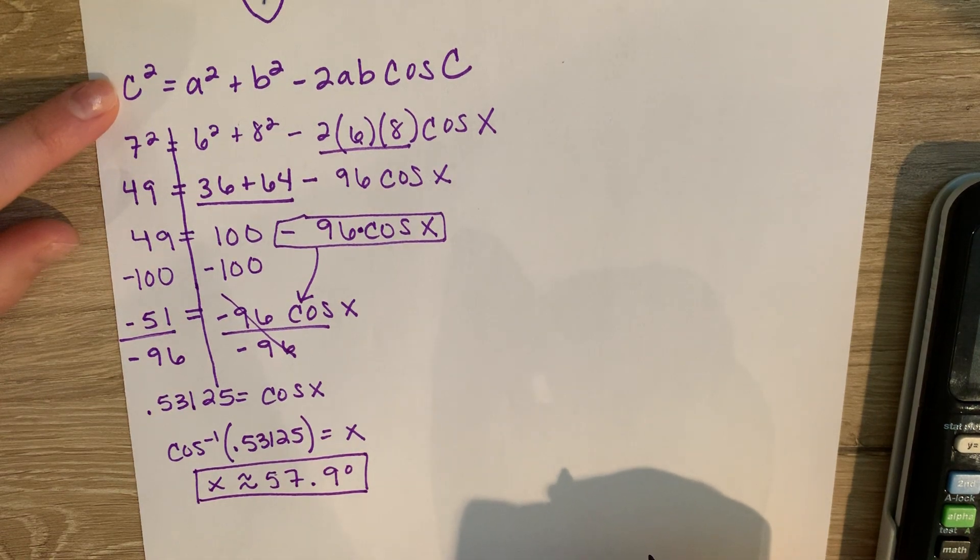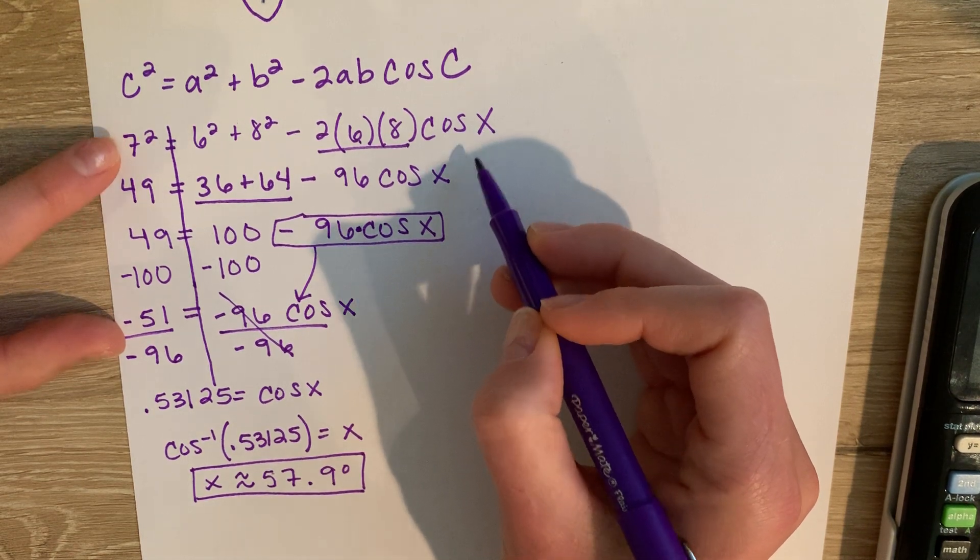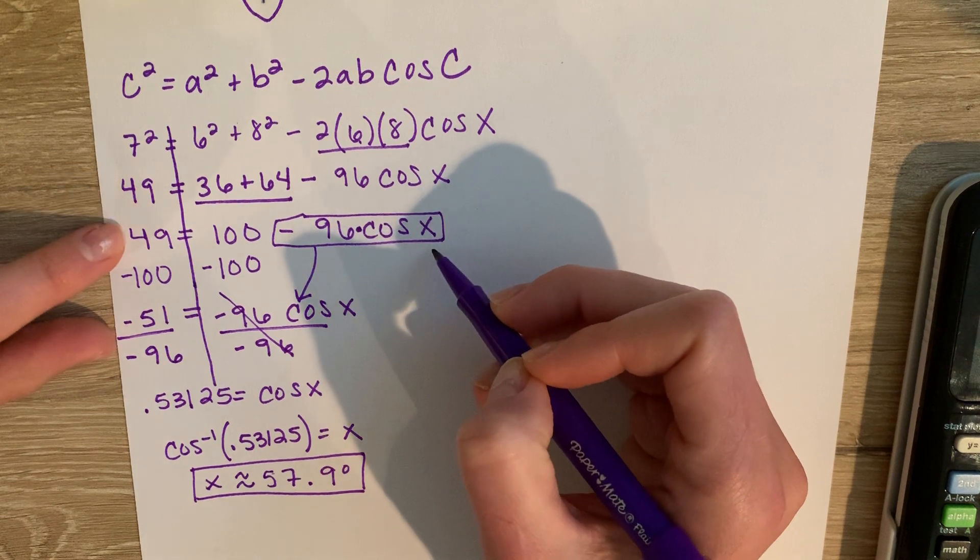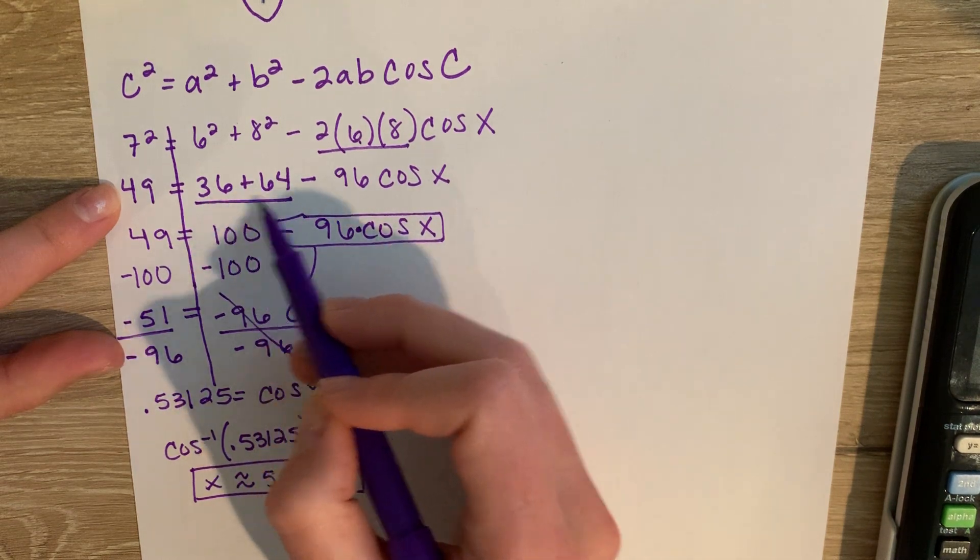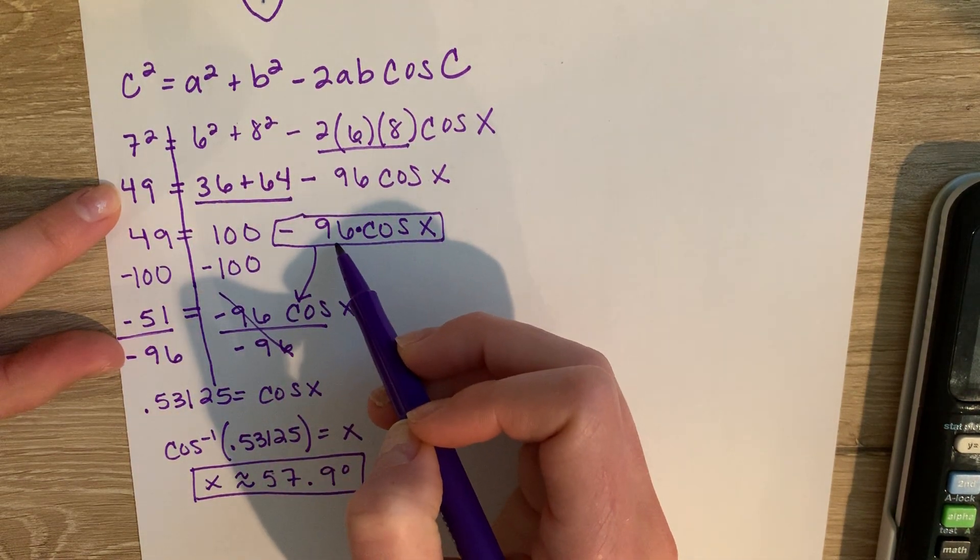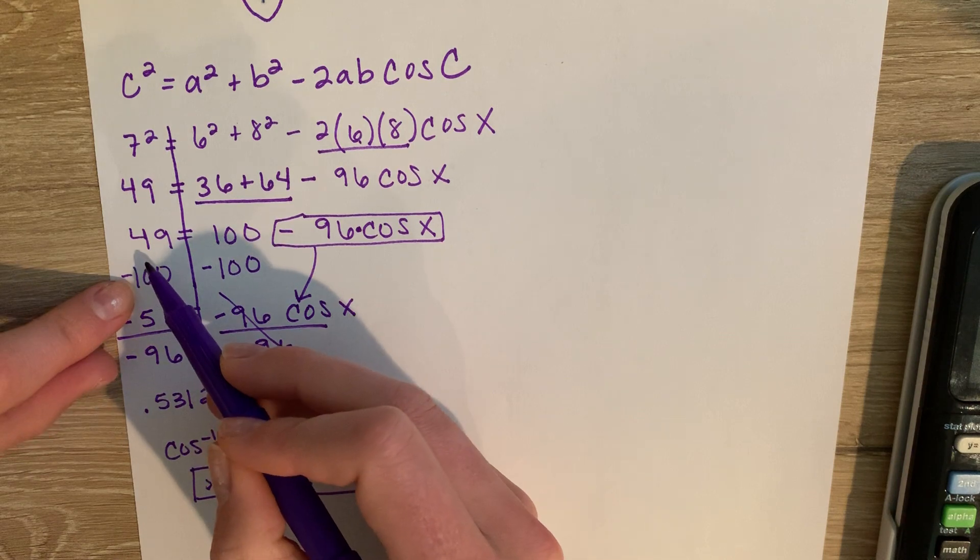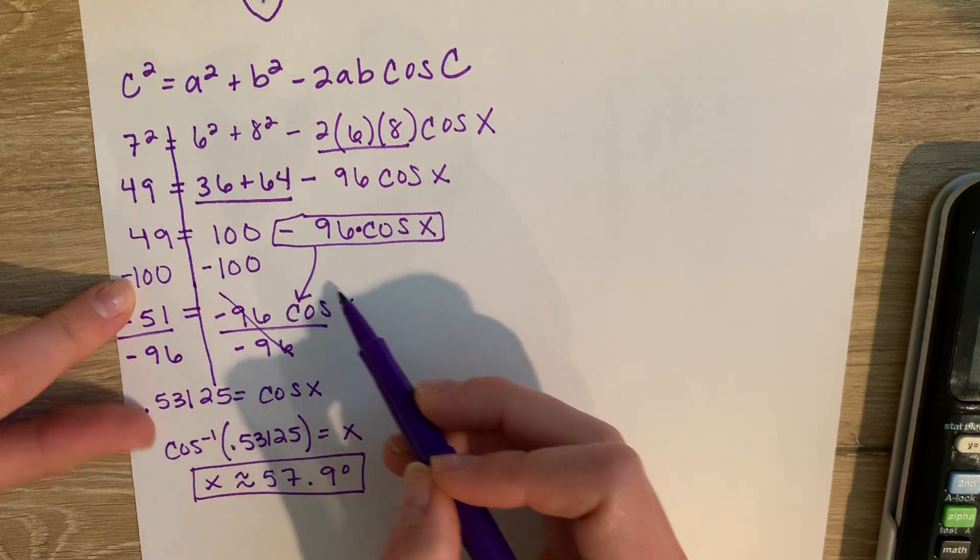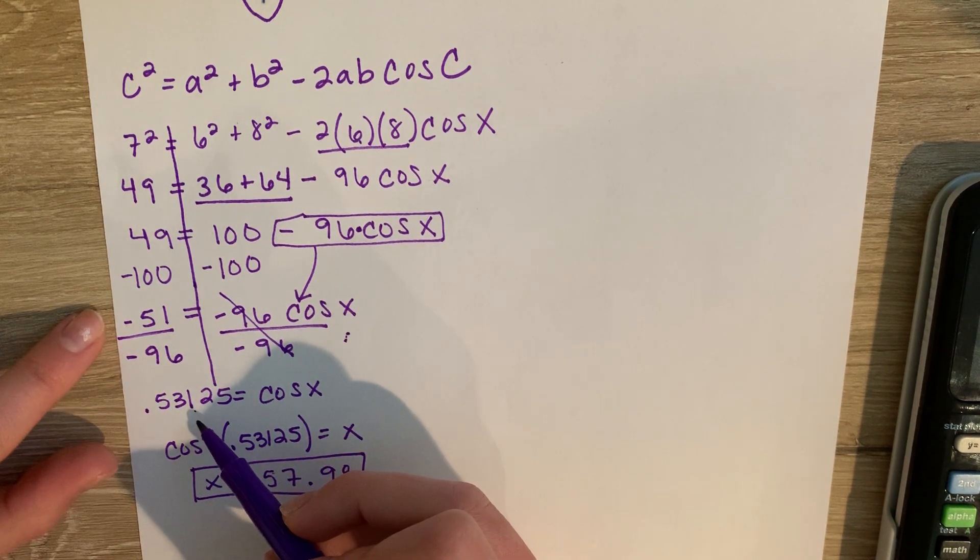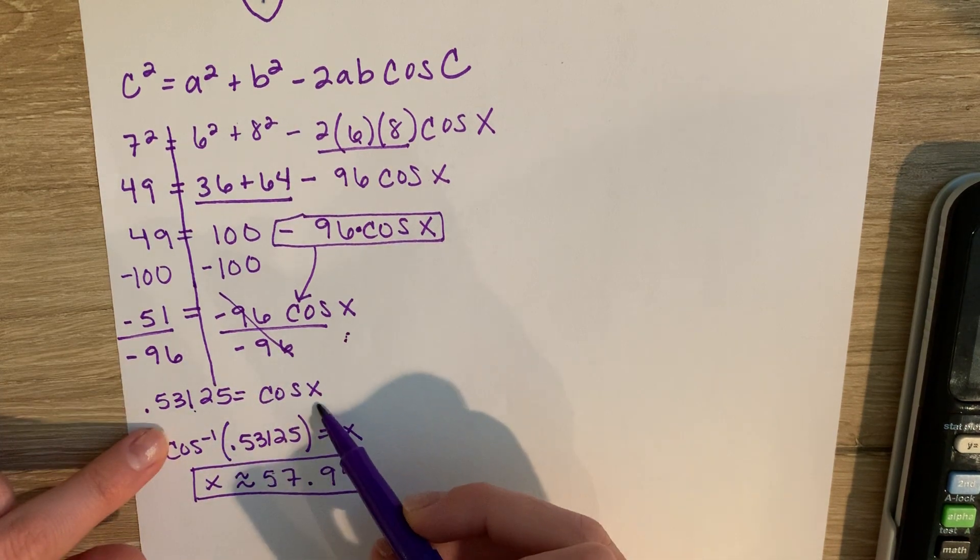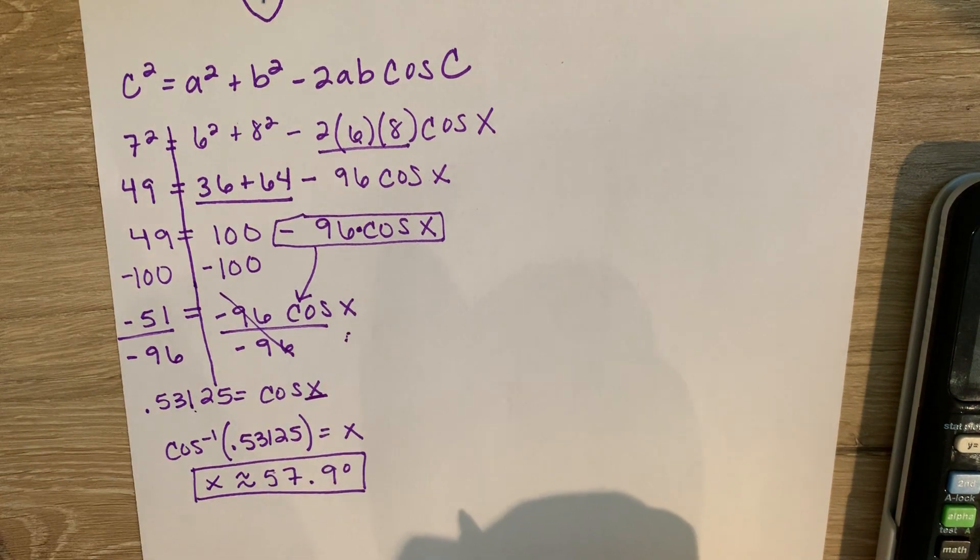So first thing I did, remember, I identified the pair. The pair was x as an angle and 7 as the side. I plugged in my points. Then I did some algebra. I combined like terms 36 plus 64 to get 100. I could not combine the 100. I could not combine the 96 because 96 is attached to the cosine by multiplication. Subtracted the 100 over, just like I would in a two-step equation. And then I divided by negative 96. So notice that I ended up with a positive here, right, because a negative divided by a negative. Then I did the inverse because I'm trying to get x out of the trig function. And that's where I get my 57.9.